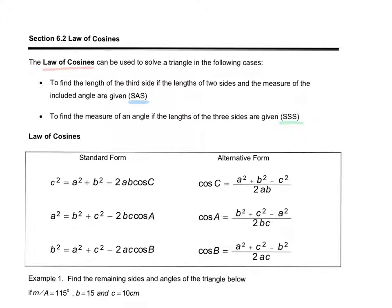We have two different ways of writing the law of cosines. We have our standard form, which we want to use for side-angle-side, and we have our alternate form that we're going to use when we know all three sides. These can all be used interchangeably — the alternative form just comes from rearranging the standard form, and it depends on which two sides and angle you know, or which angle you are solving for.